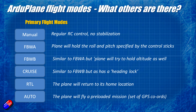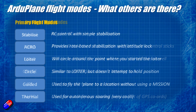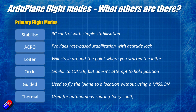Most pilots will fly in either Fly by Wire A, B, or Cruise. People like me who are a bit different quite like Manual as well. Return to Launch works the same as the copter version, though the copter version automatically lands and disarms itself — you have to set up landing as a separate thing in ArduPlane. Auto is exactly the same as in ArduCopter: it automatically flies a preloaded mission. Stabilize provides RC control with simple stabilization, a nice mode to fly in. Acro provides rate-based stabilization with attitude lock, though a well-trimmed plane in Manual works well unless it's quite windy, in which case I'll use Stabilize.